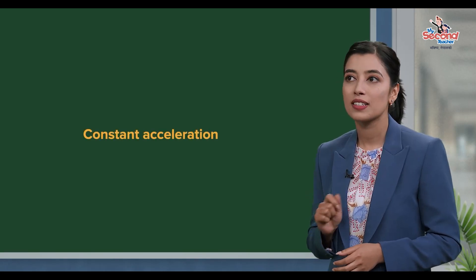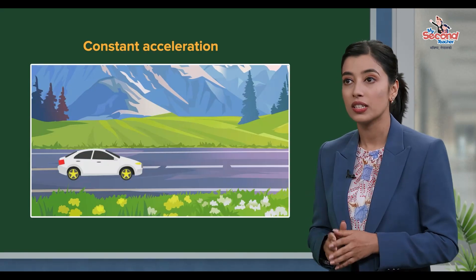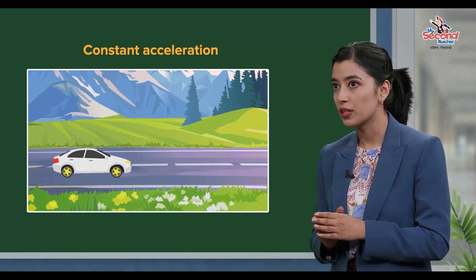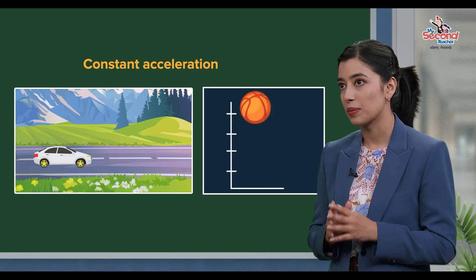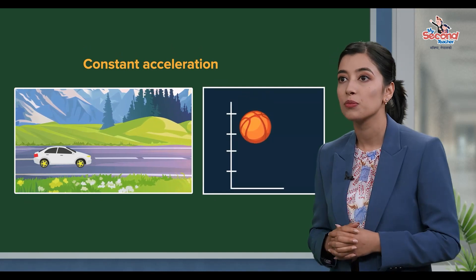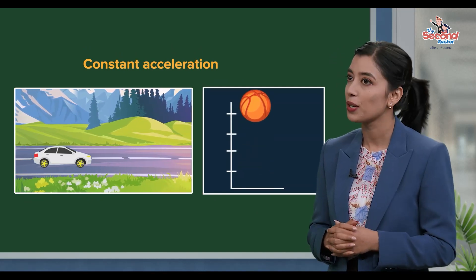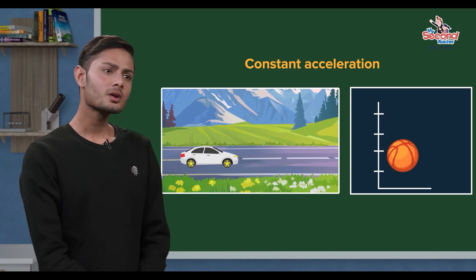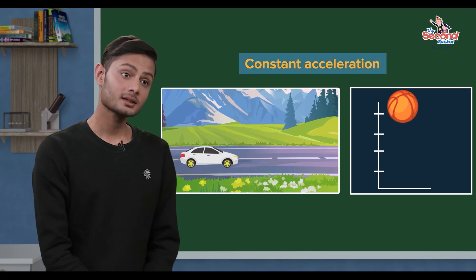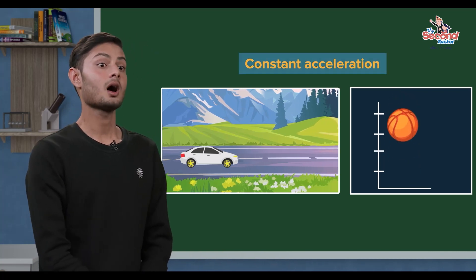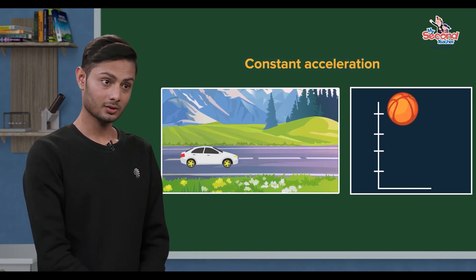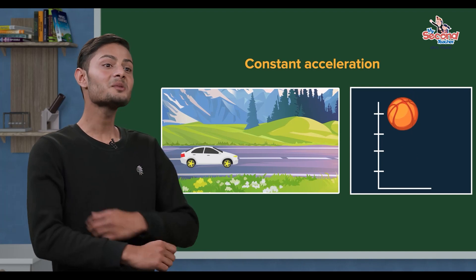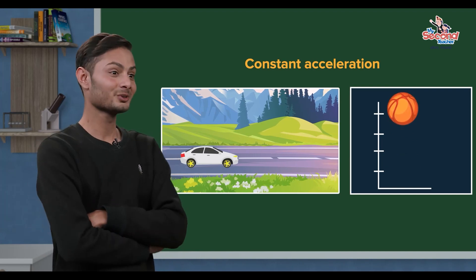For constant acceleration objects moving in a straight line, we can describe the equations of motion. If you have constant acceleration for objects, you can determine how much movement there will be.